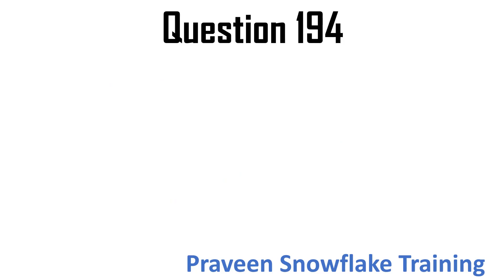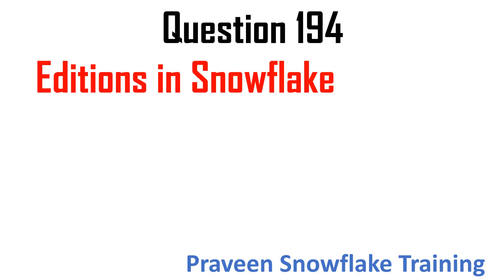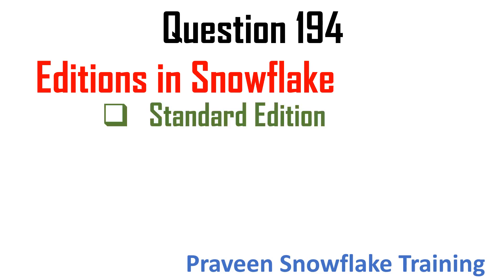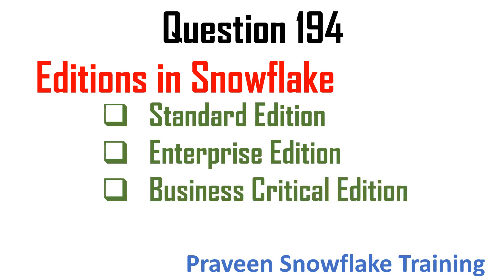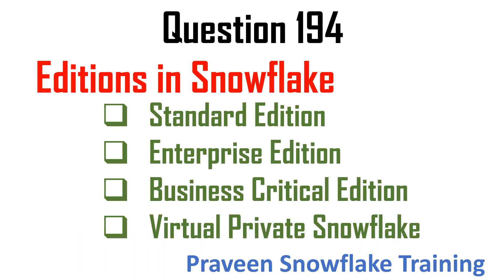Question 194: Editions in Snowflake — this is one of the important questions asked recently. There are four editions: standard edition, enterprise edition, business critical edition, and virtual private Snowflake. Most companies use the enterprise edition. For more critical domains like banking, companies go for business critical or virtual private Snowflake.